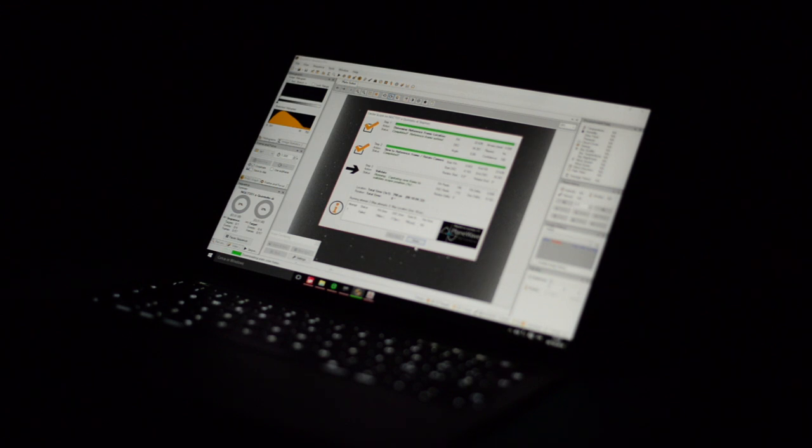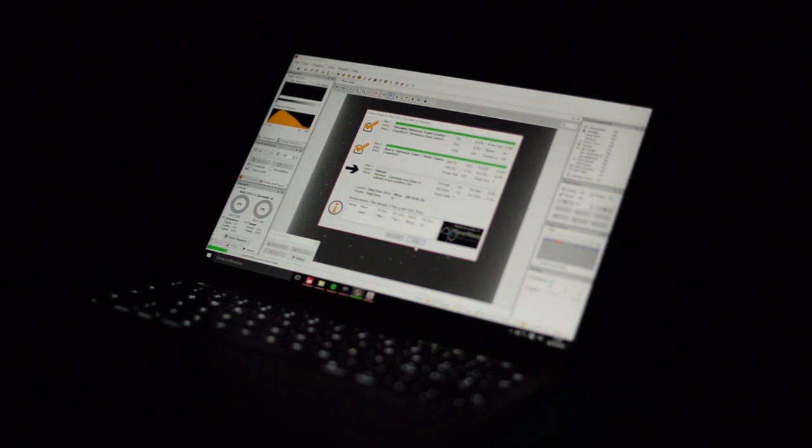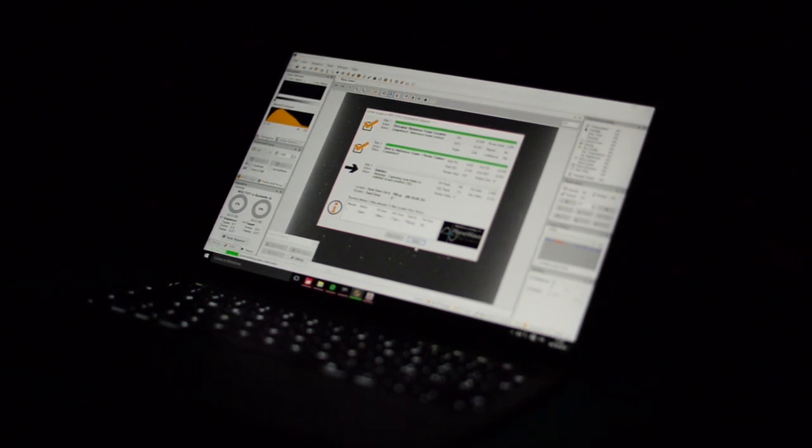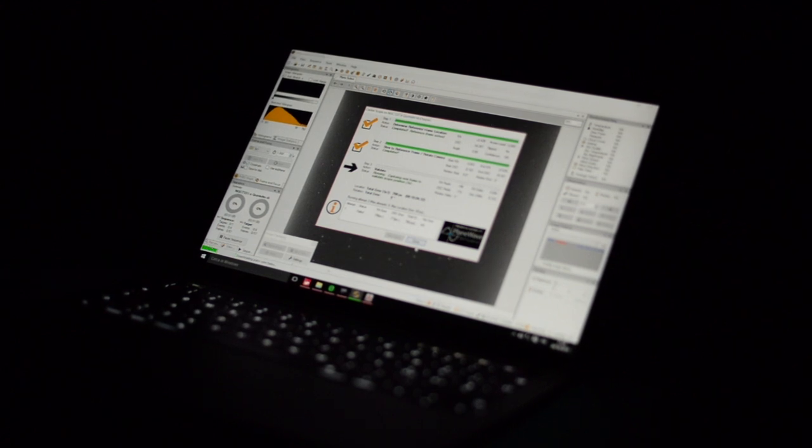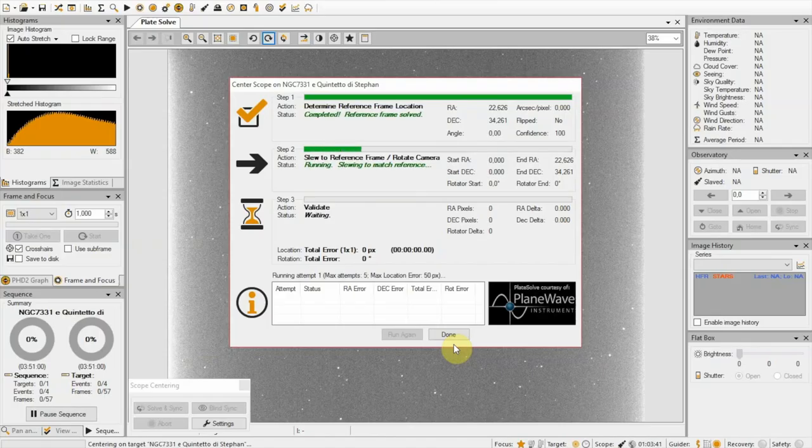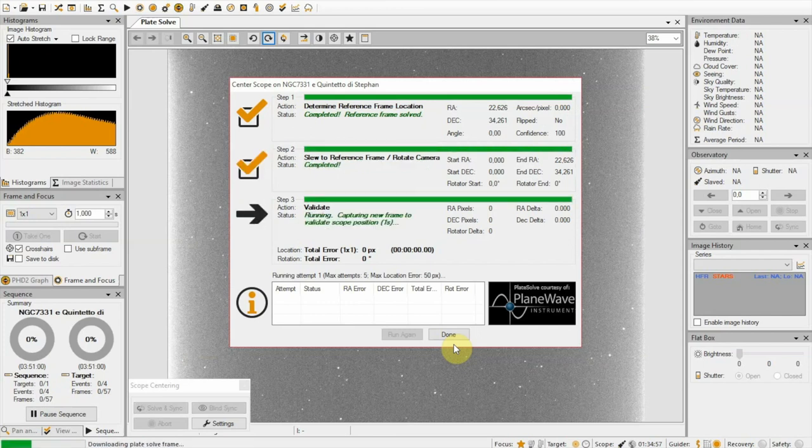So the first thing that the Sequence Generator Pro performs is the plate solving. So it controls the camera and the mount, and it points the mount to the expected position of the object. So we take a picture and compare the picture recorded with the star catalog in order to perfectly center the image.